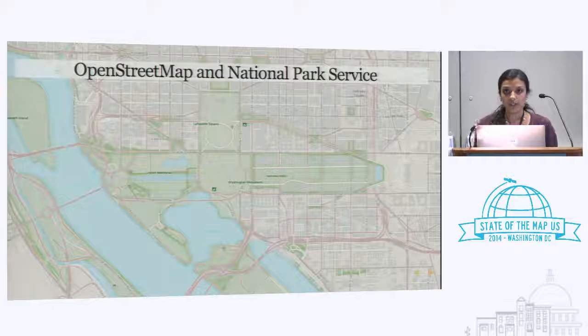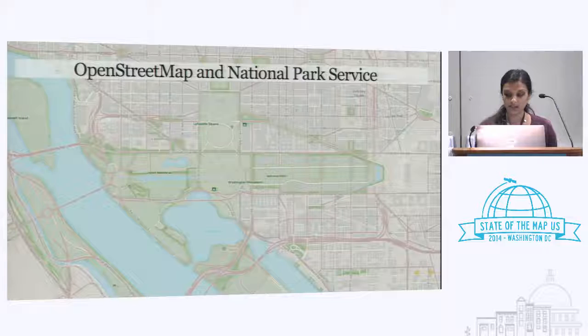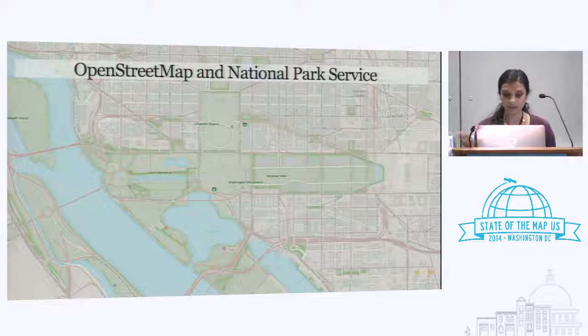We're using OpenStreetMap primarily for base data — features like roads, buildings, hydrology, and place names. We're using our own NPS data for features like National Park boundaries, plates, National Park names, and POIs. The POIs are coming from our Places system that Jim just talked about.